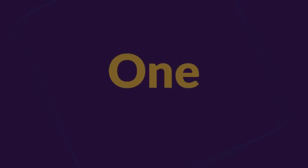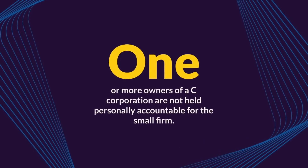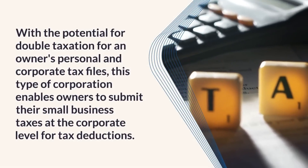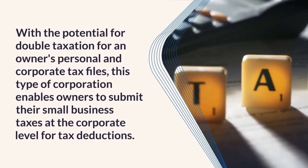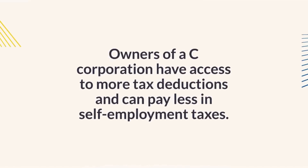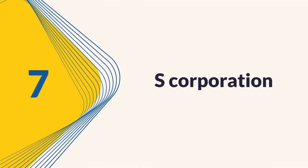6. C Corporation. One or more owners of a C Corporation are not held personally accountable for the small firm. With the potential for double taxation, this type of corporation enables owners to submit their small business taxes at the corporate level for tax deductions. Owners of a C Corporation have access to more tax deductions and can pay less in self-employment taxes.